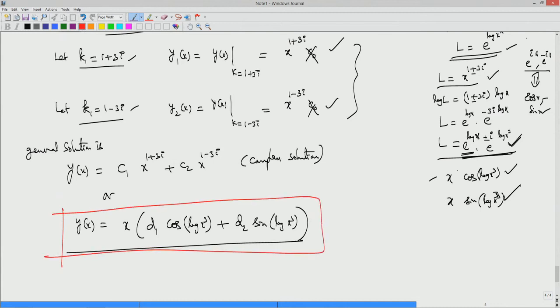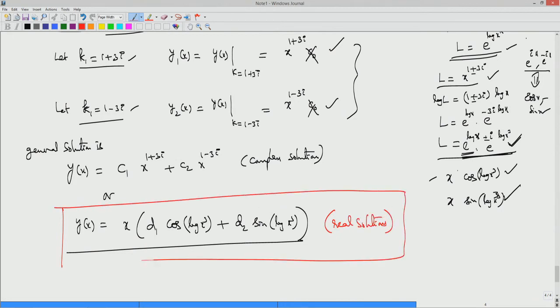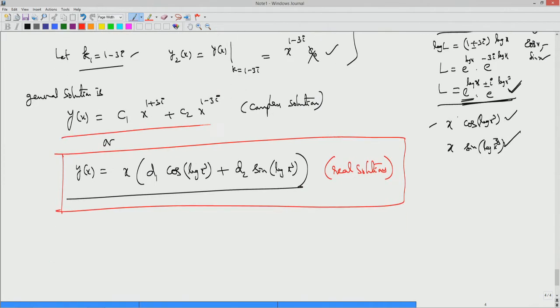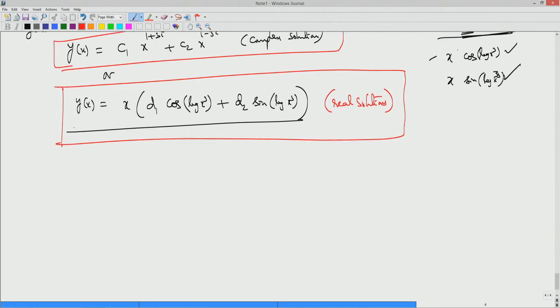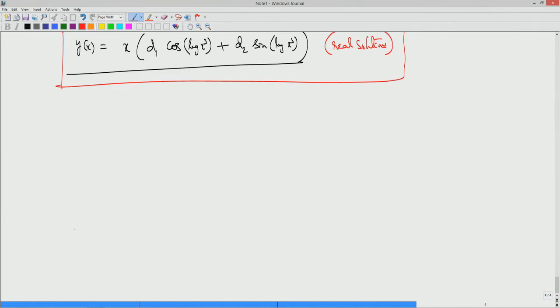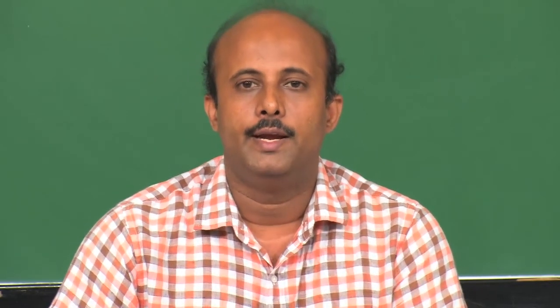This is the general solution in real form. The complex form C₁x^(1+3i) + C₂x^(1-3i) does not make practical sense. We will next demonstrate an example where the indicial equation gives two roots whose difference is a nonzero positive integer — this is Case 2.